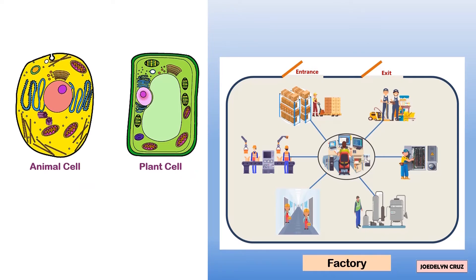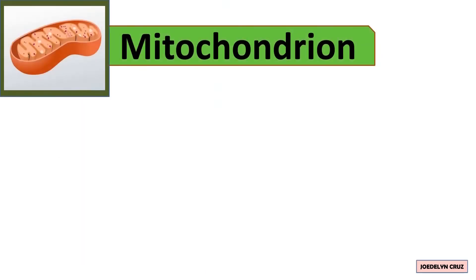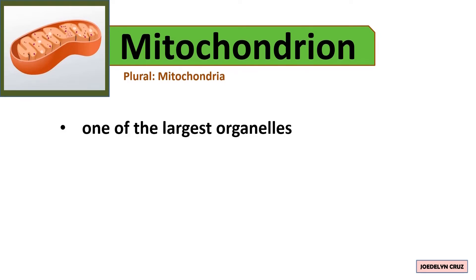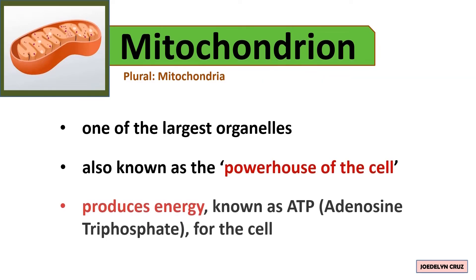The factory cannot operate without energy. The electric station represents the mitochondrion — it provides energy for the factory to continue to operate. The plural of mitochondrion is mitochondria. Mitochondrion is one of the largest organelles and is also known as the powerhouse of the cell. It produces energy known as ATP, or adenosine triphosphate, for the cell.